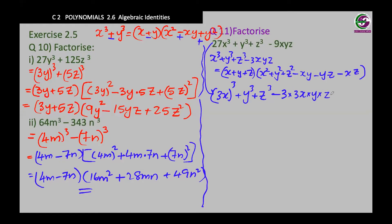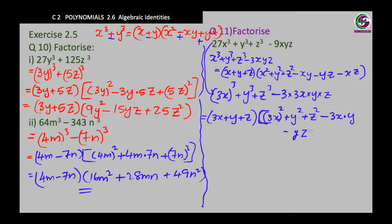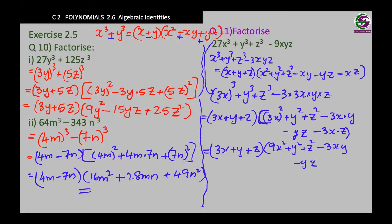This is in the form of the identity, so we rewrite it: in the first bracket we have the first, second, and third terms; in the second bracket, the square of each term. So 3x squared is 9x squared, plus y squared, plus z squared, minus 3xy, minus yz, minus 3xz. That's the factorization of the given polynomial.